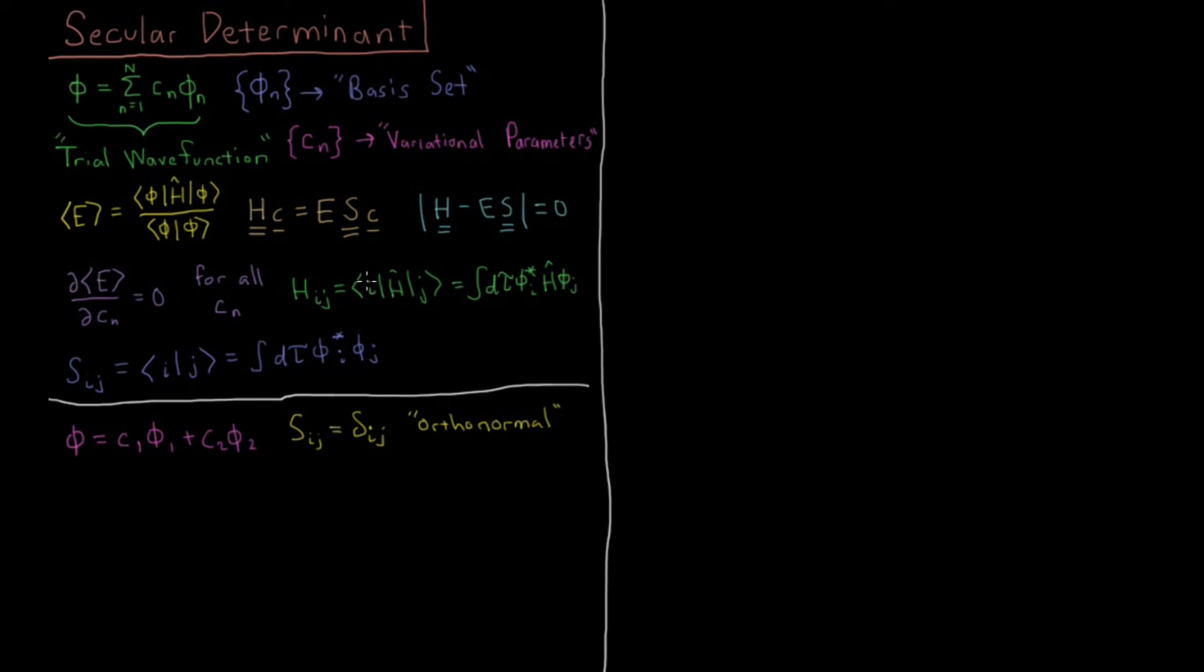And we're also going to assume that we have an orthonormal basis set. That is, any i*i integral is going to be 1, any i*j integral is going to be 0 if i and j are not the same. So our S matrix is just an identity matrix, giving us Hc = Ec, which is the matrix form of the Schrödinger equation.